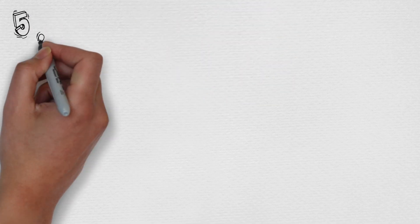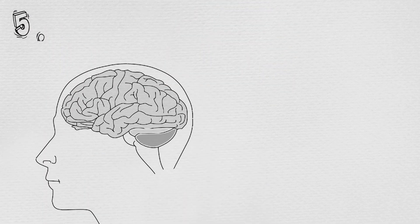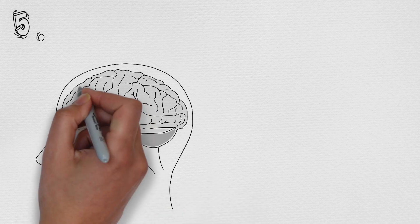Number four: A human brain mein approximately one hundred billion neurons hote hain. Isn't that mind blowing?